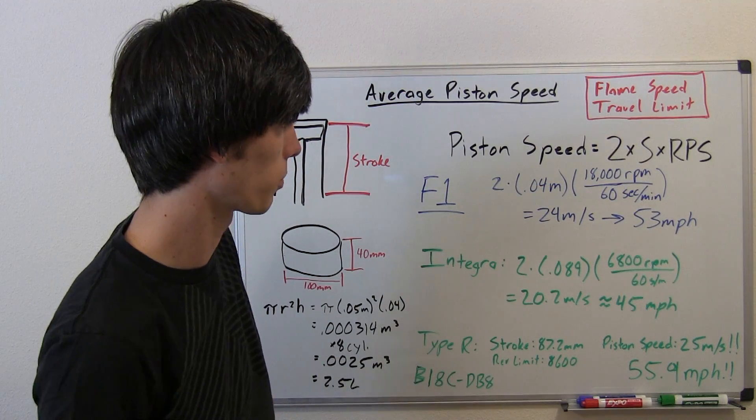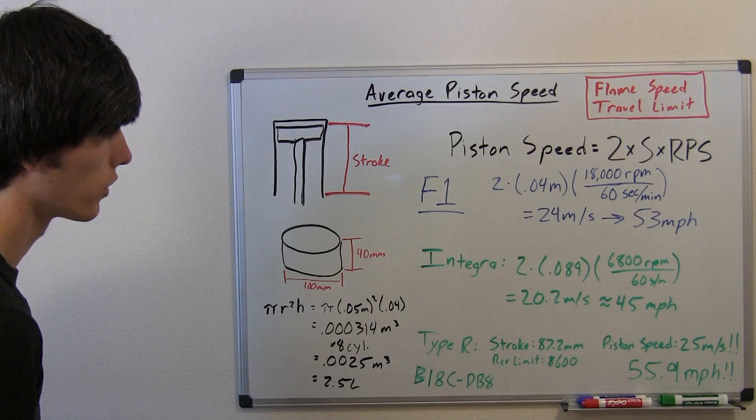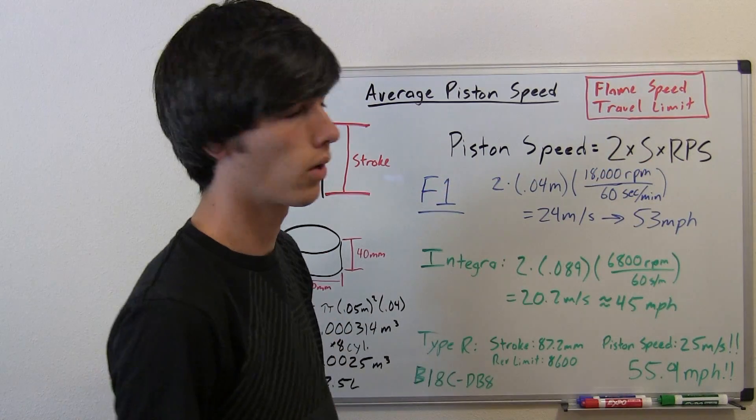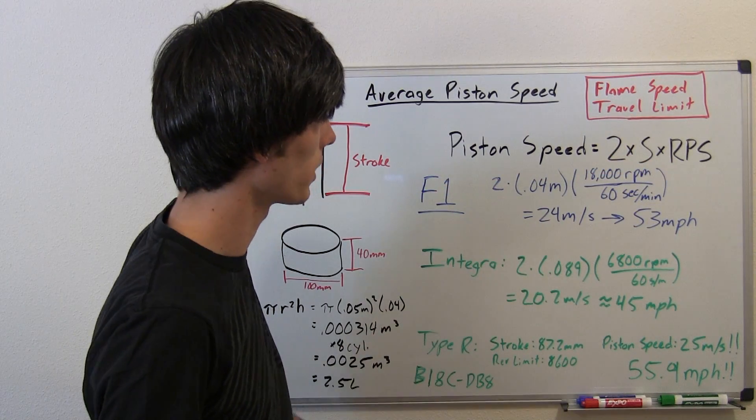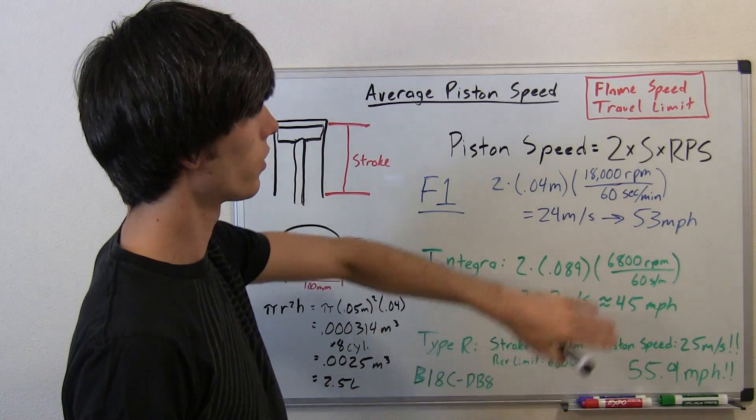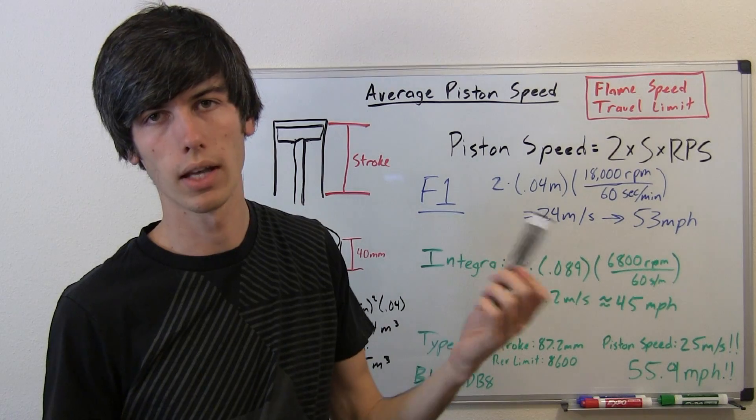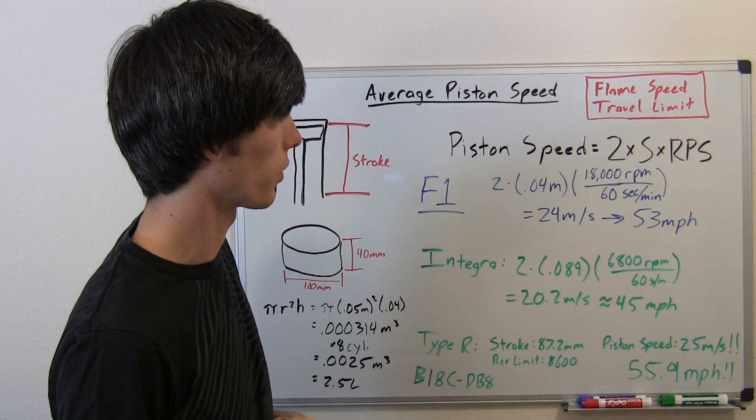We're going to get this in units of meters per second, and then you can convert it to whatever you're familiar with. Revolutions per second. Now, on your tachometer, you're going to be given revolutions per minute. So when you're doing the math, you're going to want to remember to divide by 60 so that you get that into revolutions per second.